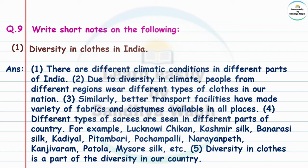Different types of sarees are seen in different parts of the country — for example, Lakhnavi Chikan, Kashmir Silk, Banarsi Silk, Kadiyal, Pitambari, Pochampalli, Narayan Pet, Kanjivaram, Patola, Mysore Silk, etc. Diversity in clothes is a part of the diversity in our country.